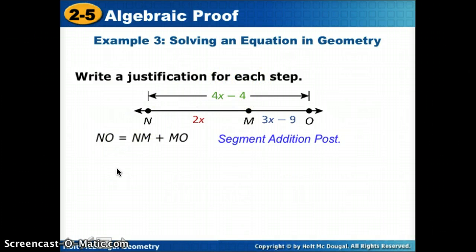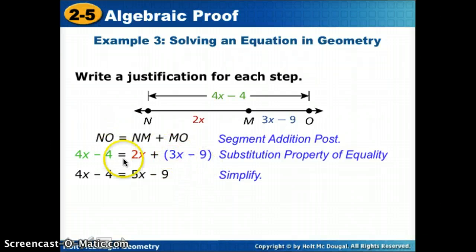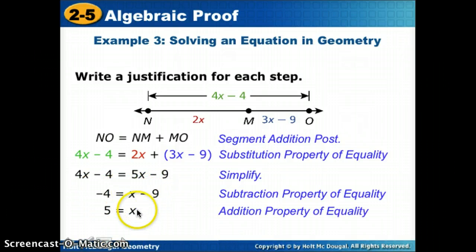So notice plugging something in has to do with the substitution property. So I'm going to use substitution, I'm going to plug in NM's measure, 2x, and 3x minus 9 for MO. Now, if I'm going to solve for x, I see that I have like terms right here, so sometimes we can call that combining like terms. You can also call it simplifying. So the first step, I would combine like terms. Now, if I have x's on both sides, I want to take the smaller of the x's and I'm going to subtract it from both sides. So using subtraction property, I subtracted 4x. So now, my x is on the right. To get x by itself, I'm going to add 9 to both sides. And using addition property, we get that x is equal to 5.